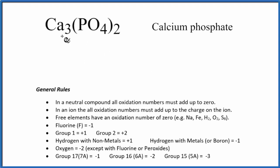In this video, we'll find the oxidation numbers for each element here in Ca3(PO4)2. That's calcium phosphate. So we'll use these rules here, and let's see how it works.